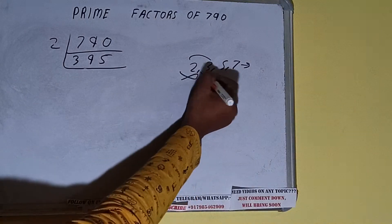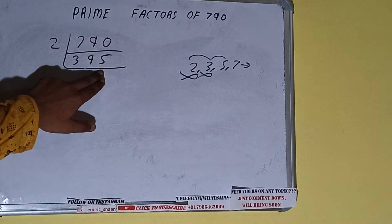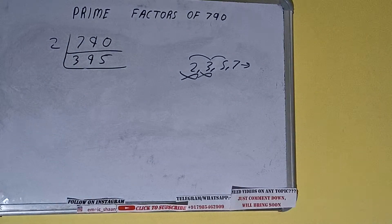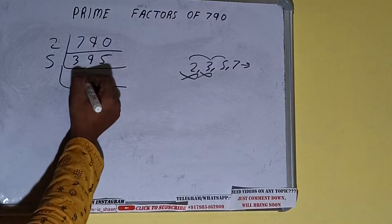So let's check with 5. The last digit is 5, so it is divisible by 5. So divide it and we'll be having, 7 fives are 35.